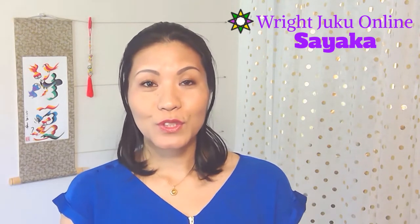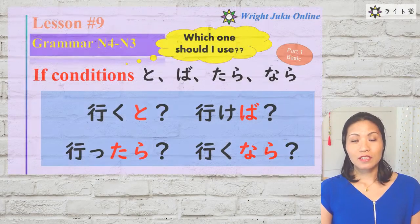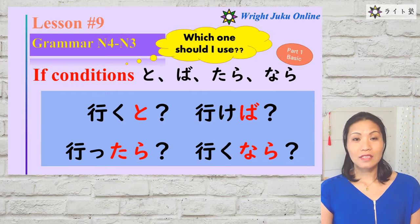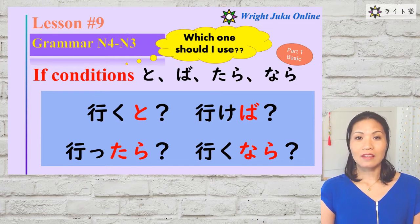Welcome to Raijuku Online. I'm your teacher, Sayaka. Today's lesson topic is If Condition: To, Va, Tara, and Nara.